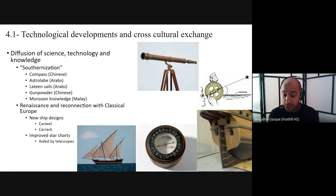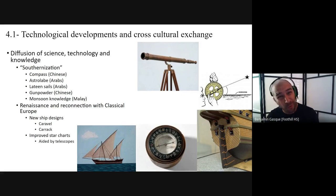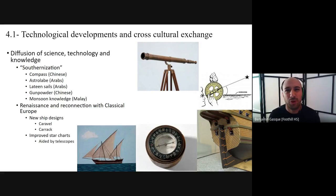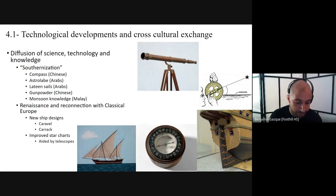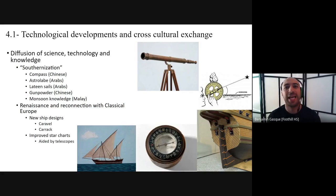New ship designs were pioneered by Europeans during this age of exploration that allowed them to venture into more dangerous waters. Most ships used in Europe before 1450 were called barges — they could be very large boats, but they weren't used for much besides coastal travel. They were not designed to go out into the deep waters of the ocean, meant to stay close to shore and safe harbors. The two or three ship designs you really need to know are the caravel, the carrack, and one more: the fluyt, spelled F-L-U-Y-T.